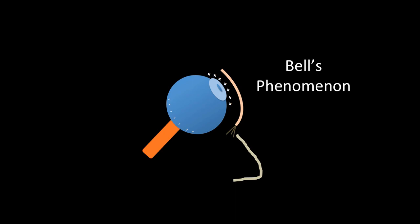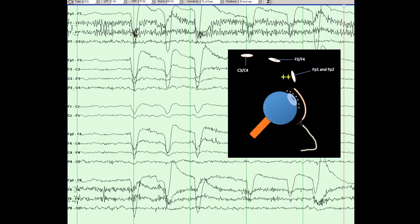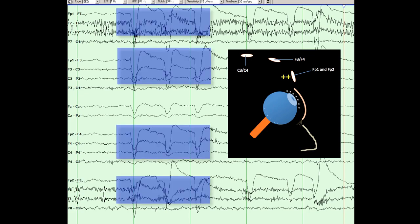From the perspective of the EEG electrodes closest to the eye, this upward deflection of the eye will cause a large positive signal at the frontal polar electrodes FP1 and FP2. On EEG, this results in a very large deflection in the frontal polar electrodes on both sides.